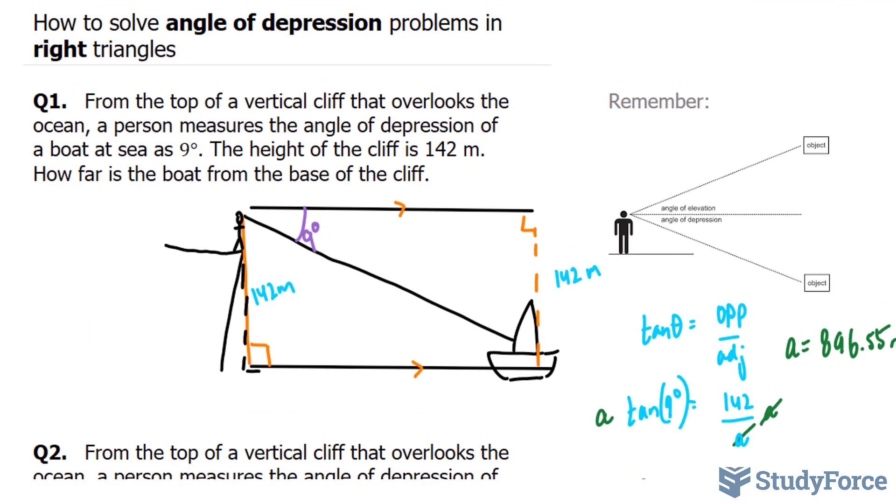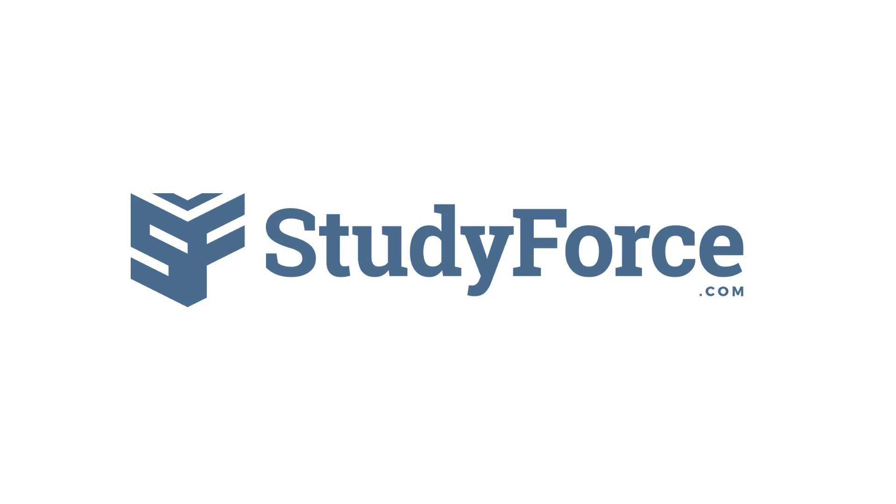And so there you have it. Two examples on how to solve angle of depression problems using right triangles. If you found this tutorial helpful, please support our channel by subscribing or by liking this video. If you have any further questions, visit our website at studyforce.com. We are an online service for students seeking free homework help. See you soon.